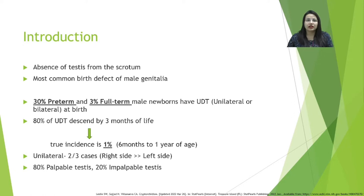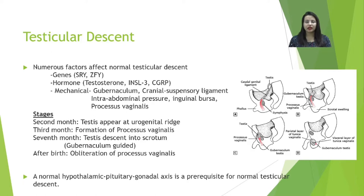Most cases are unilateral, with around two-thirds being right-sided undescended testes. 80% of undescended testes are palpable, while 20% are impalpable testes.